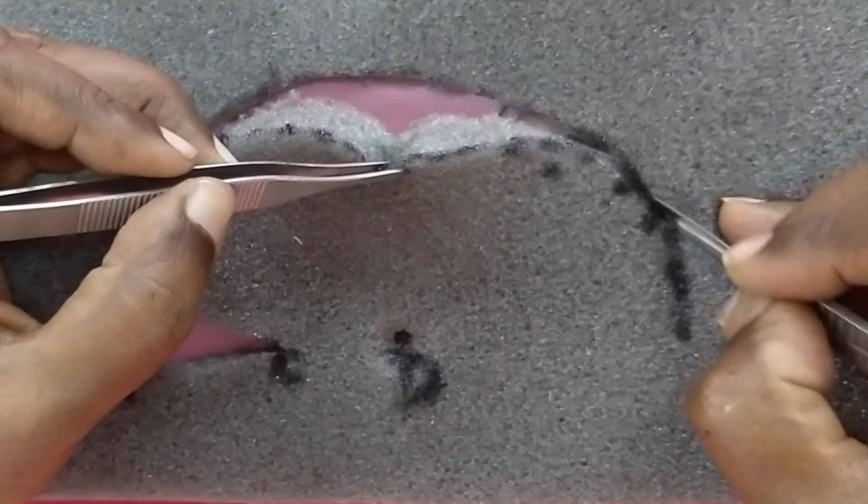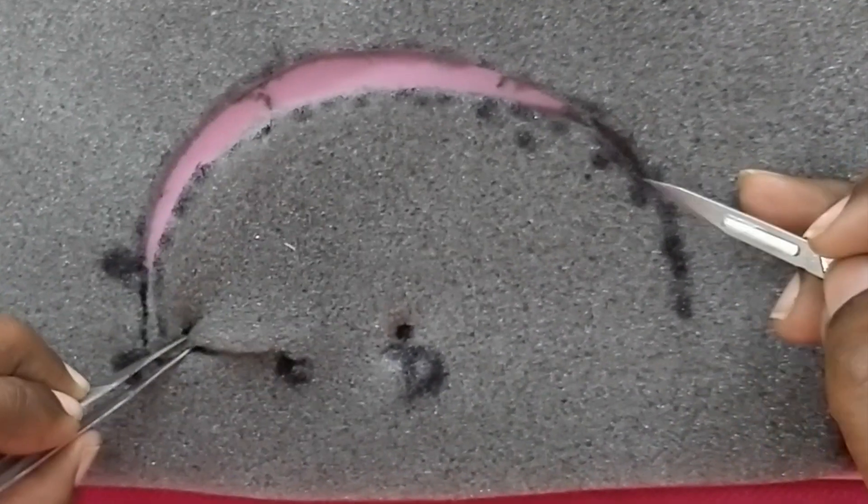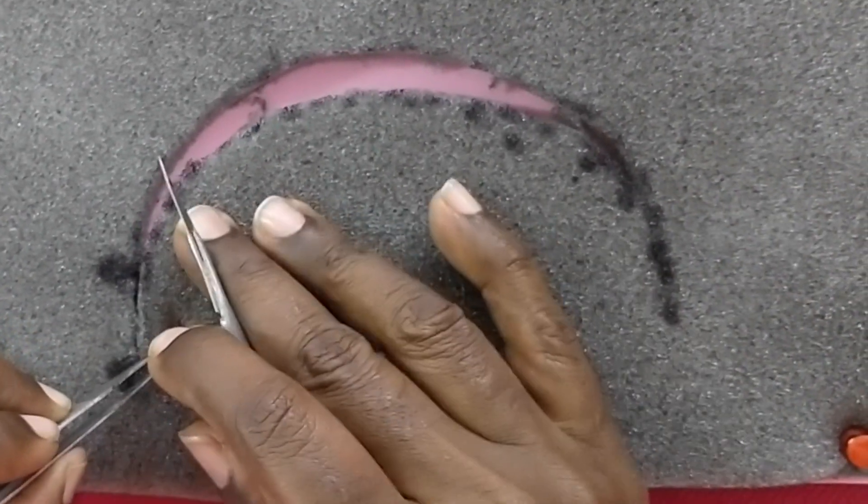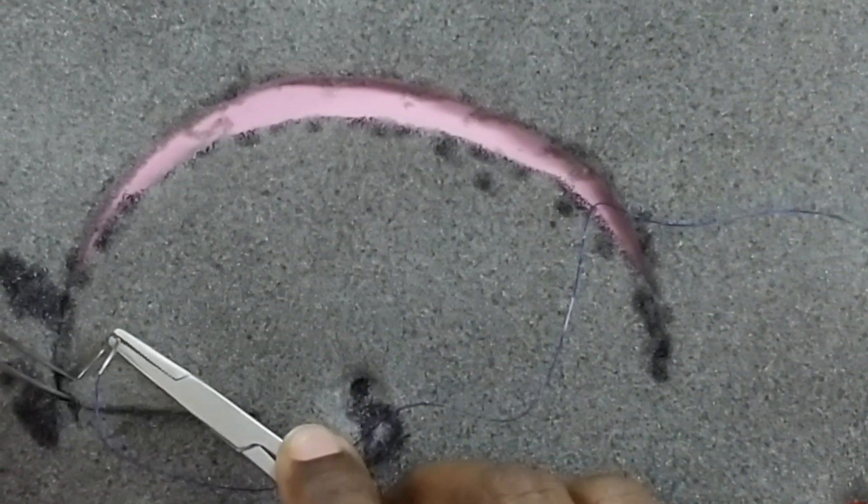Once the flap is raised, it will be rotated in such a way that the defect is closed. The flap inset can now be done.